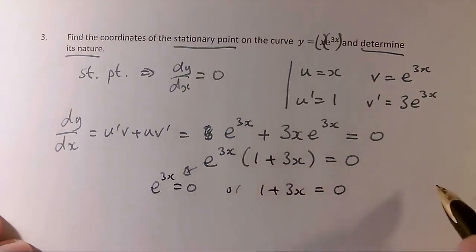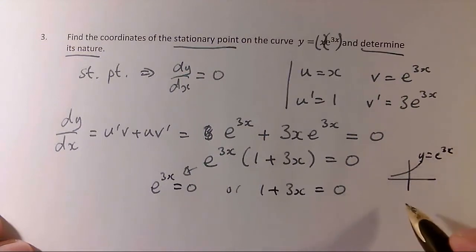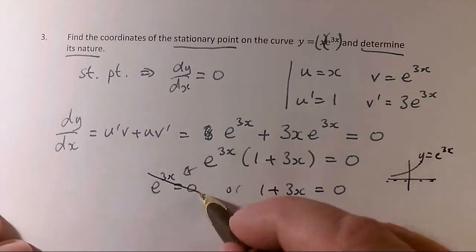Well, e to the 3x is never 0. The shape of the e graph looks like this. This is y equals e to the x, or e to the 3x looks similar. It never becomes 0. It has an asymptote. So therefore, that one's impossible.